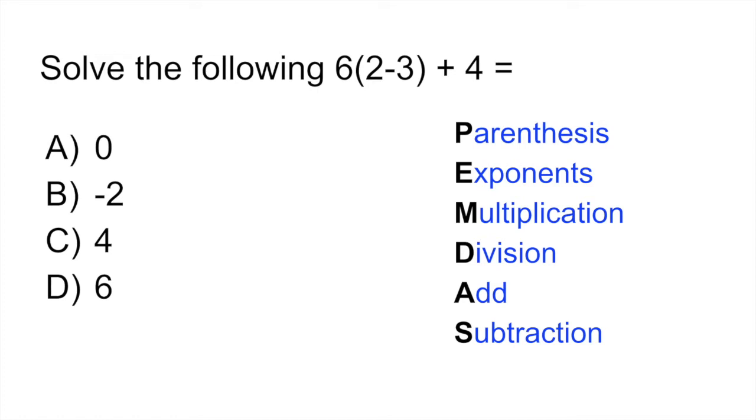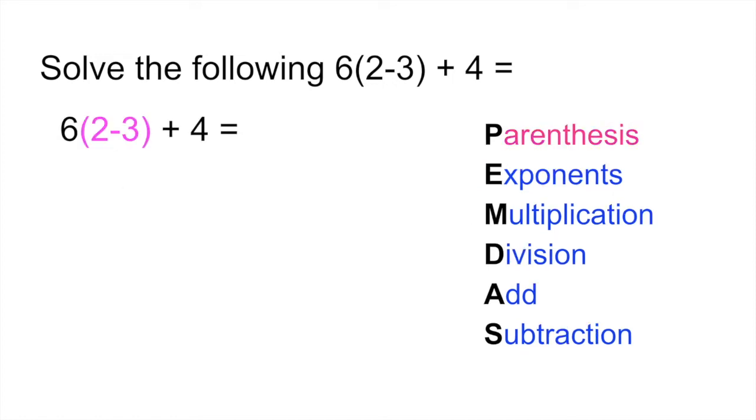This basically is telling you in what order you have to do the operations in an equation. P stands for parentheses, then you do the exponents, multiplication, division, addition, and subtraction. So in our problem, we would first do the parentheses, which is 2 minus 3. So that gives us 6 multiplied by minus 1 plus 4. Do we have any exponents? No. Next step, multiplication. So we would multiply 6 by minus 1. That gives you negative 6 plus 4. No division here. And then that leaves us with adding those two terms. So minus 6 plus 4 is minus 2. So your answer would be B.